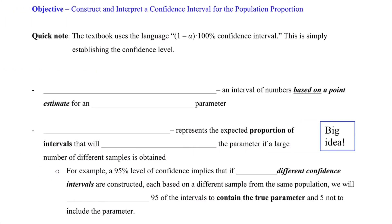That takes us to our next objective then, which would be to construct and interpret a confidence interval for the population proportion. Just a quick note, the textbook uses the language 1 minus alpha times this 100% confidence interval. That is, the alpha level is going to be connected to our confidence level as well, as they end up being complements of each other. But we'll discuss that within the examples.